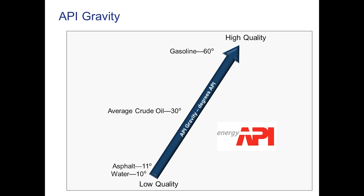The quality of any crude oil and its value to the refiner is directly related to its API gravity. As shown in the chart, the API gravity of gasoline, a high-quality product, is about 60 degrees API. But the API gravity of a low-quality product like asphalt is around 11 degrees API, just above water. The average crude oil is around 30 degrees API. To summarize: the lighter the crude oil, the higher the API gravity, and the more valuable that crude oil is to the refiner.